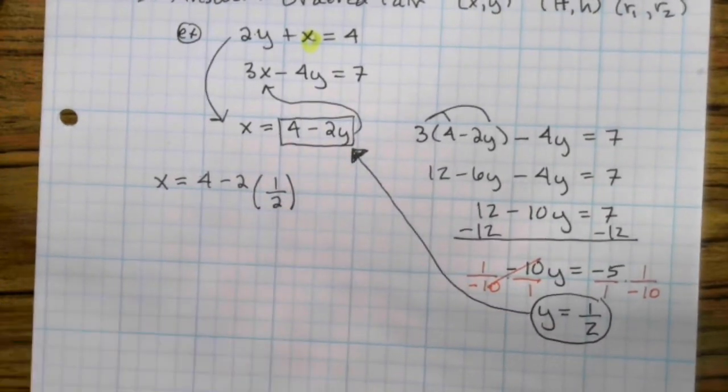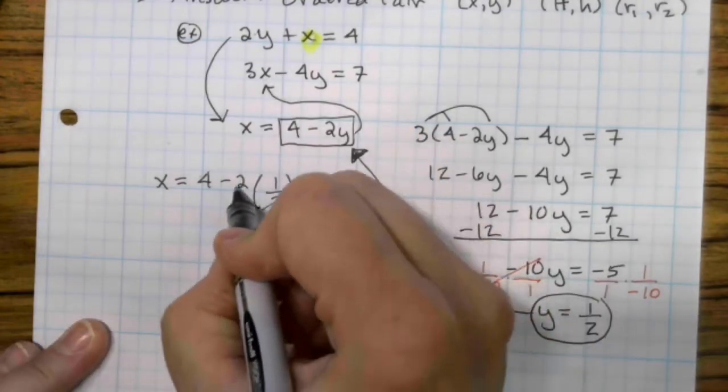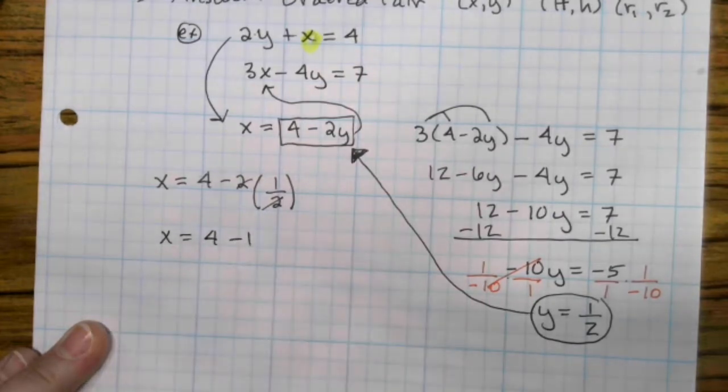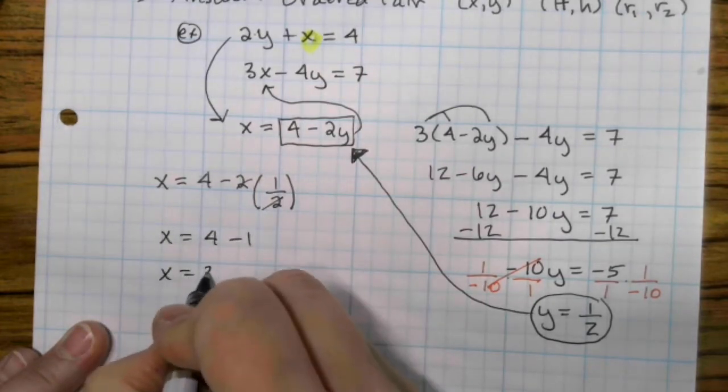And really this is just now simplifying. So 2 divides into 2 one time. x is 4 minus 1. So x is a 3.